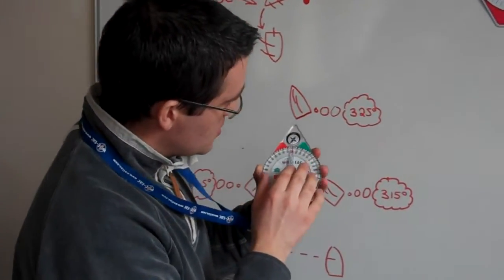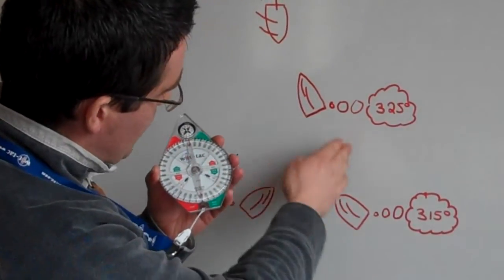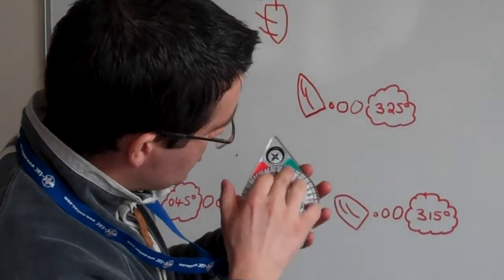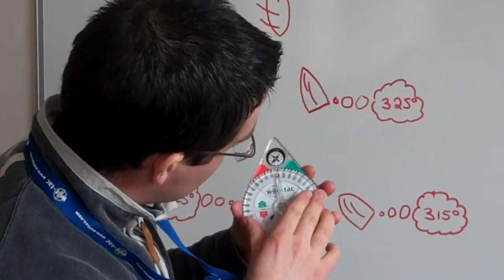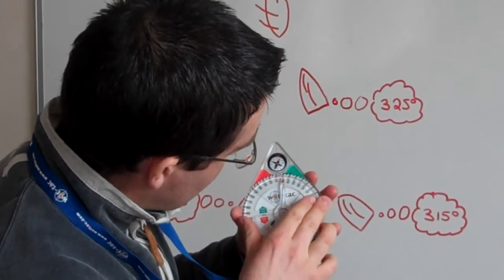So the important thing now to do is because we're on starboard when the shift happens, we dial on the starboard side, we dial up to 325 because that's the new boat heading.